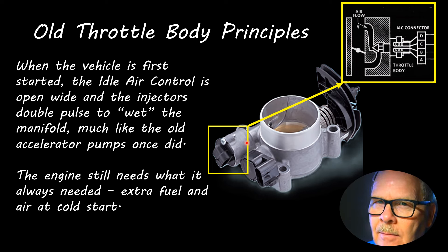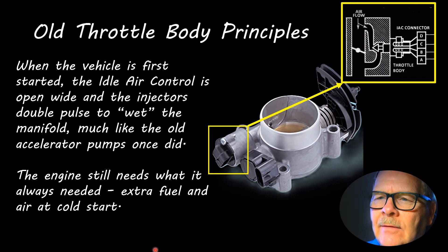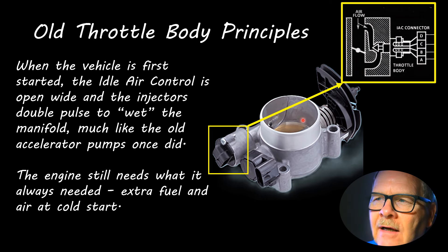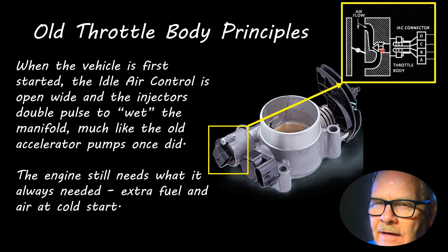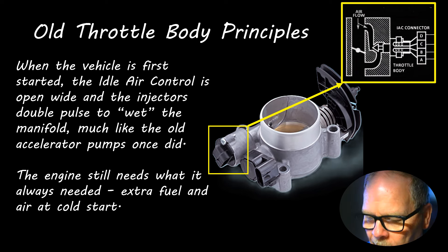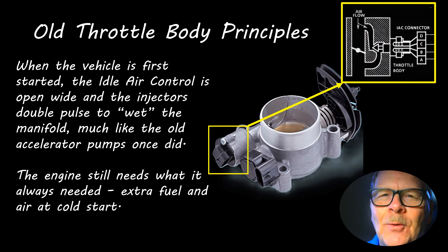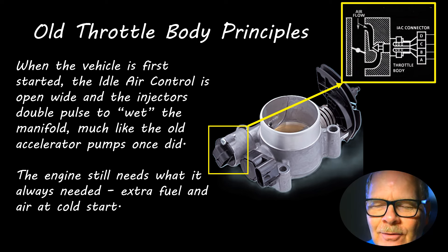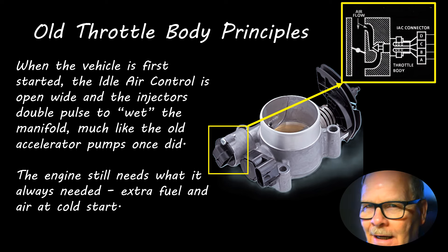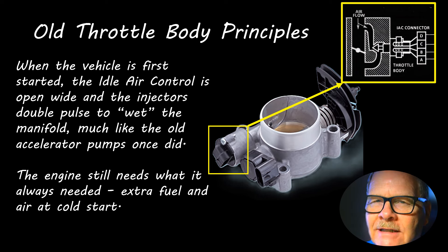For no-touch starting you want the idle air control to open wide open when you first start it, and then it goes back in and regulates the idle speed higher when it's cold, then evens back down to probably 650-700 RPM whenever it's warmed up. One time a mechanic close to me — a pretty good mechanic but still learning about fuel injection — came over and said he was having trouble getting a Ranger to idle right.